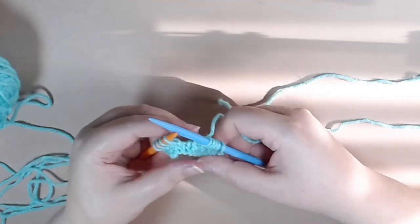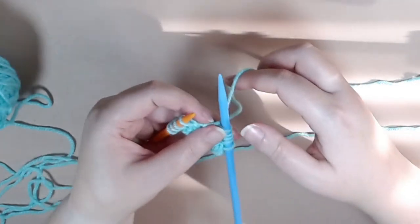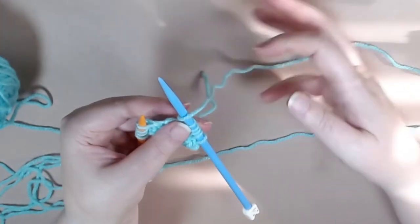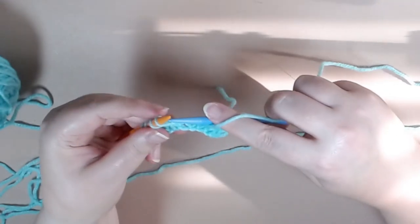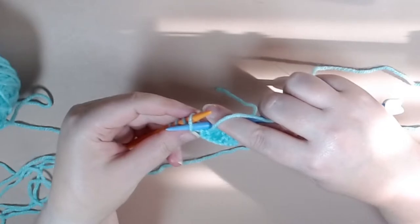So again we're going to try knitting sorry purling in the back loop. So you're going to pull your yarn forward like you normally would for purling and you're going to take your needle and this is how you normally purl right?